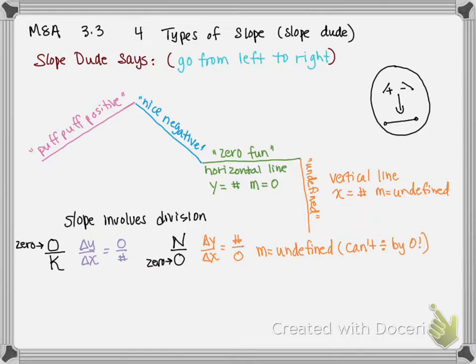As a recap, we have positive slope. We're going to color it pink. We're going to have a negative slope. Oops, sorry, positive slope. I forgot the slope. We've got a negative slope, it's going to be blue. We're going to have a zero slope. It's going to be green.